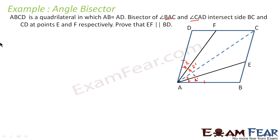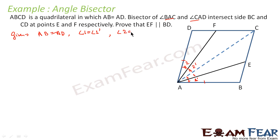What are we given? Given: AB equals AD; angle 1 equals angle 1 dash; and angle 2 equals angle 2 dash. We have to prove that EF is parallel to BD. Let's draw BD and EF — this is BD and this is EF.